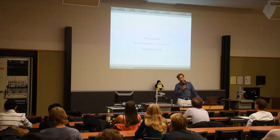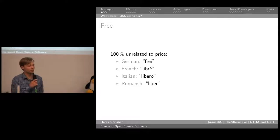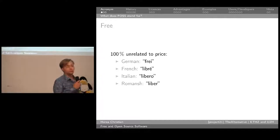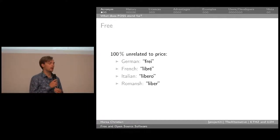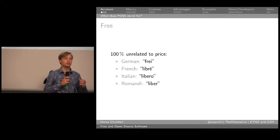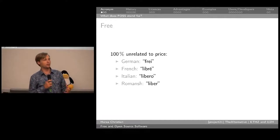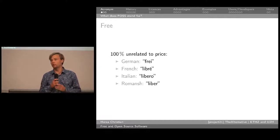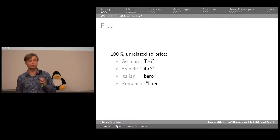Free and open source software — what does that mean? Free: the first word. Most of you might think it stands for free without cost, and indeed lots of free and open source software doesn't require you to pay for it. But free as in free and open source software is completely unrelated to price. It's about having freedom inherent in the software. The English language doesn't really have a way of specifying that, which makes it unambiguously different from free as in without any price.